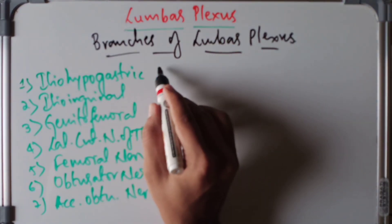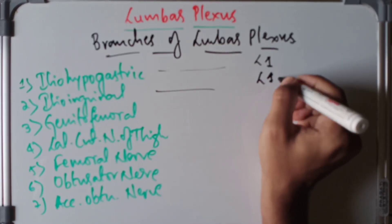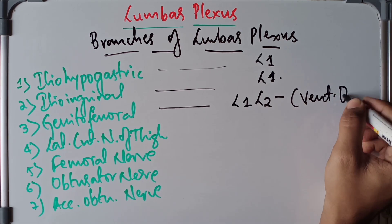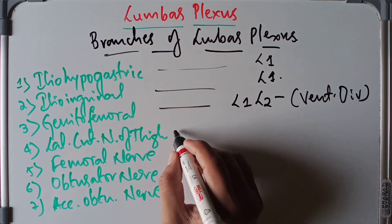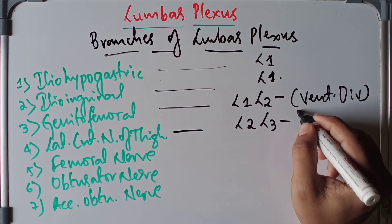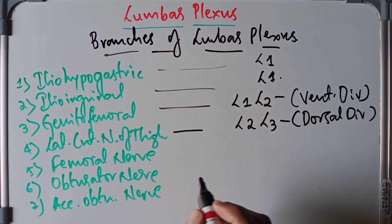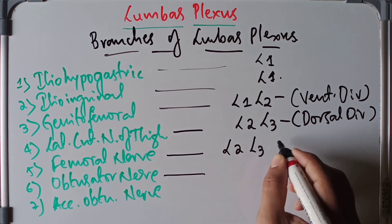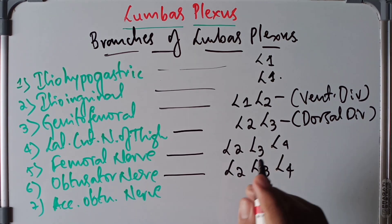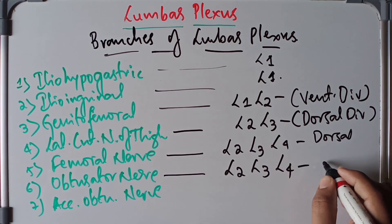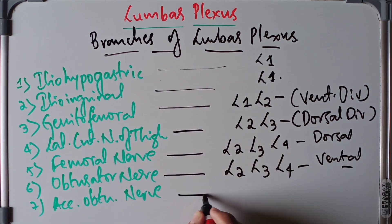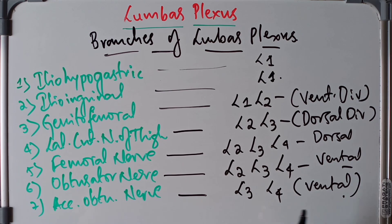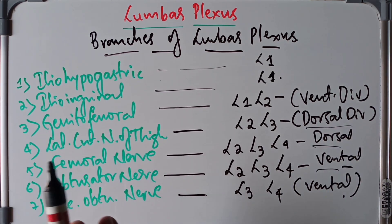Regarding root values: the iliohypogastric and ilioinguinal nerves are both L1. The genitofemoral nerve is L1 and L2 — from ventral divisions only. The lateral cutaneous nerve of the thigh is L2 and L3 — dorsal divisions. The femoral nerve is L2, L3, and L4 — dorsal divisions. The obturator nerve is L2, L3, and L4 — ventral divisions. The accessory obturator nerve derives from L3 and L4 — ventral divisions. It is important to know which division each nerve belongs to.